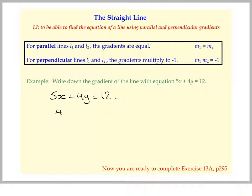So we want the 4y term on its own. Let's take 5x from both sides. So we get minus 5x plus 12. And then we'll divide through by 4.